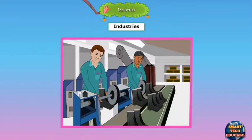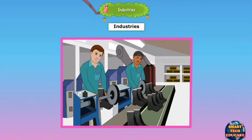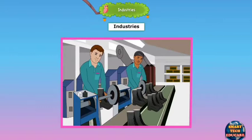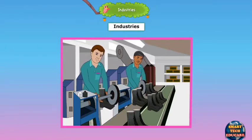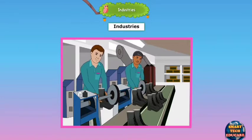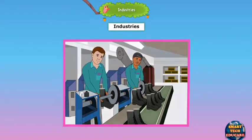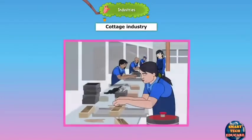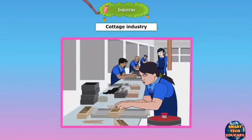The processing of raw materials into finished goods with the help of machines, skilled workers, and other factors is what is done in industries. Industries can be of three types: cottage industry, small-scale industry, and large-scale industry.